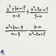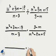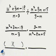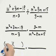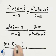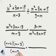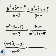Now, we need to factor this to see if there are any common factors that we can divide out. The first fraction numerator will factor into m plus 6 times m minus 3. The denominator of the first fraction is already factored.